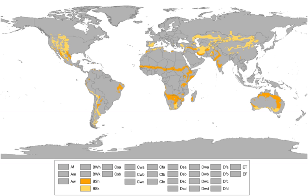To determine if a location has a semiarid climate, the precipitation threshold must first be determined. Finding the precipitation threshold involves first multiplying the average annual temperature in degrees Celsius by 20, then adding 280 if 70% or more of the total precipitation is in the high sun half of the year — April through September in the northern temperate zone.